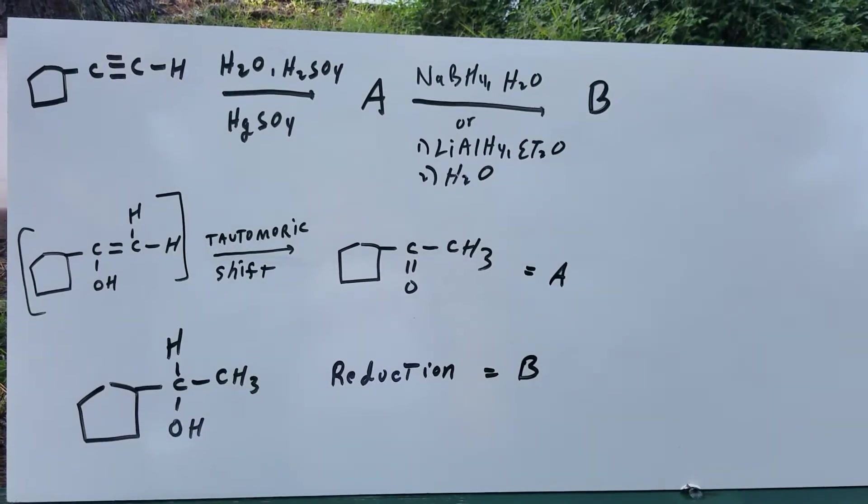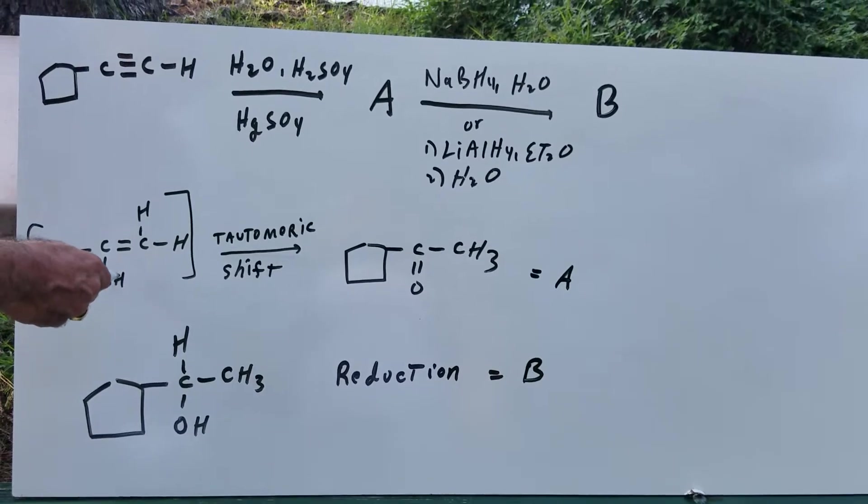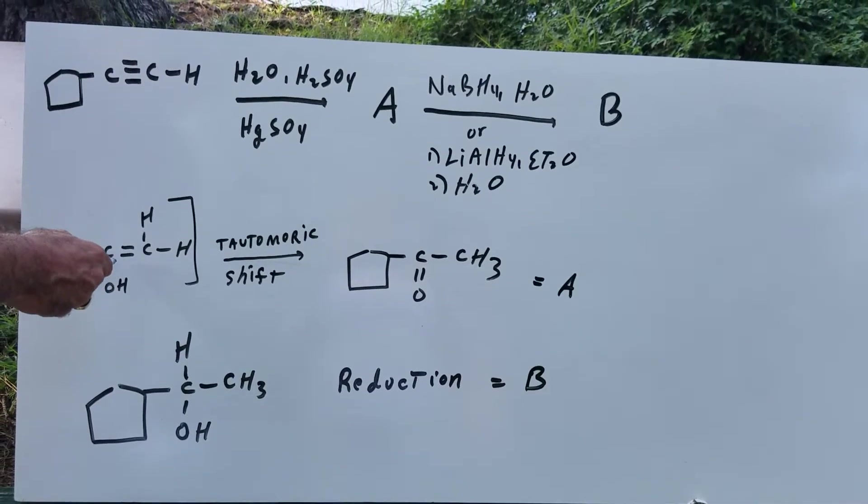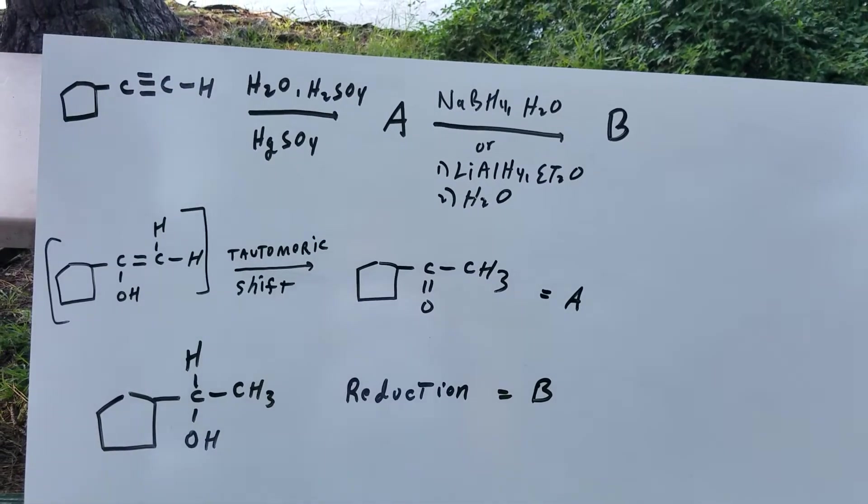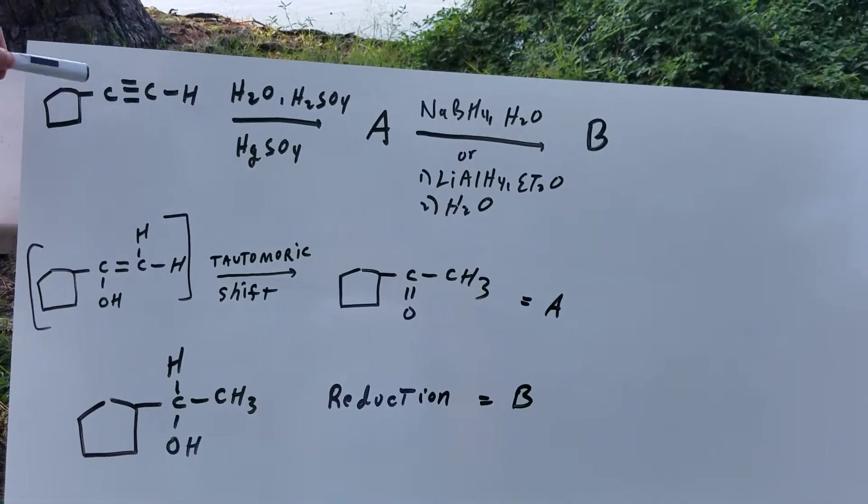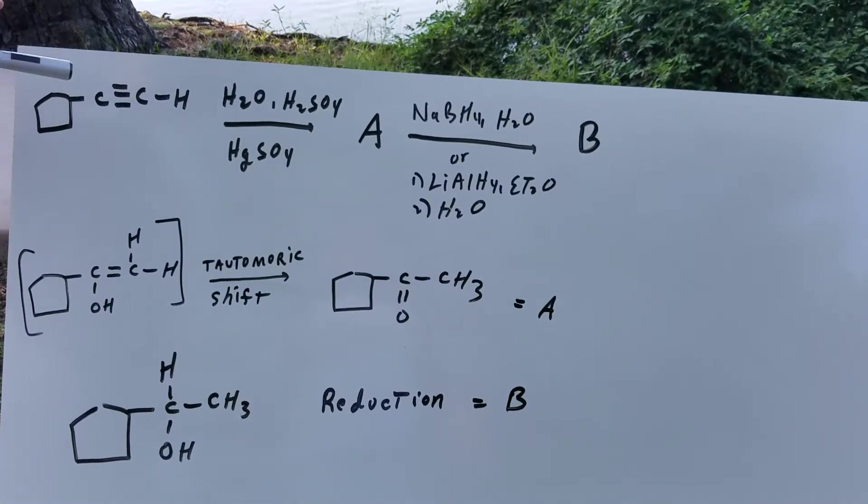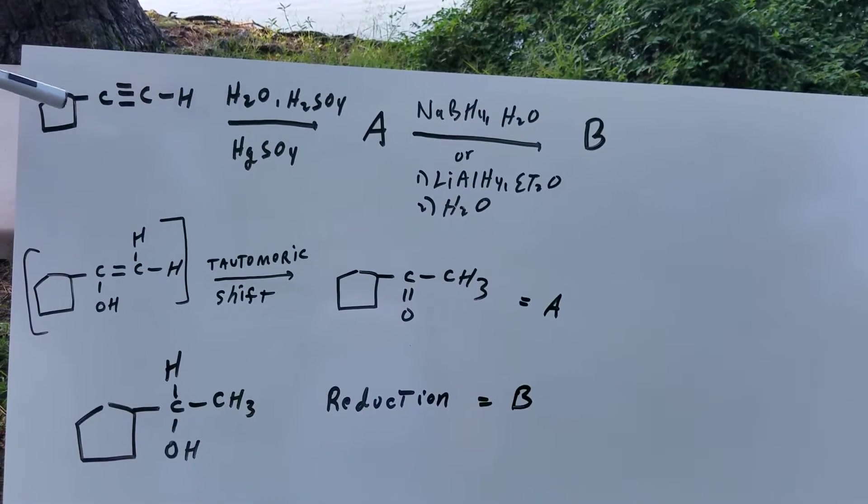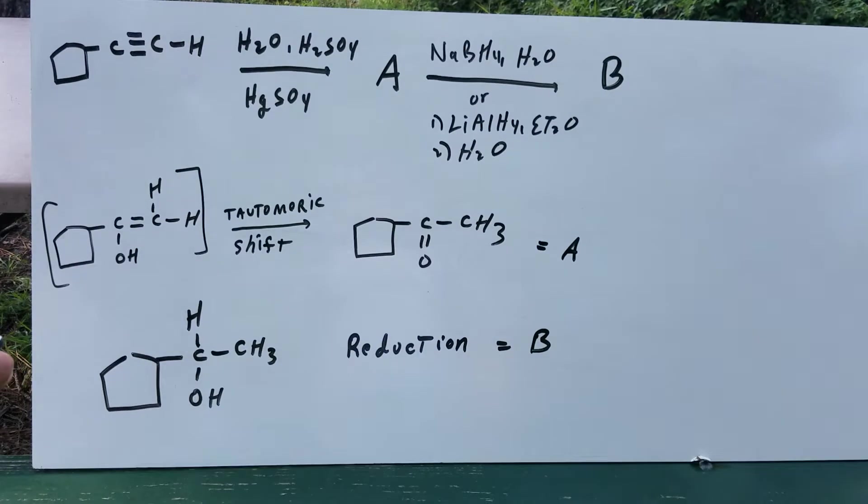Very simply, what you're going to do is move this H to here and the double bond to here, and you're going to form a carbonyl group. That's going to be your final product. As you can see, what I've accomplished - I've gone from an alkyne functional group to a ketone functional group.